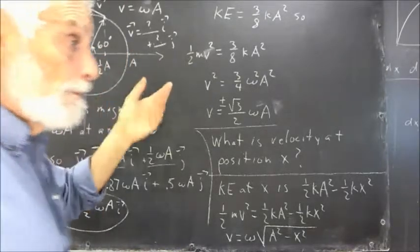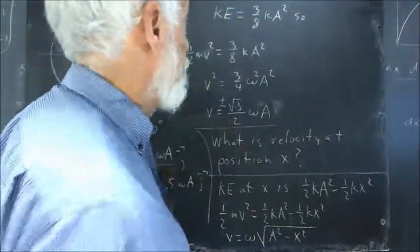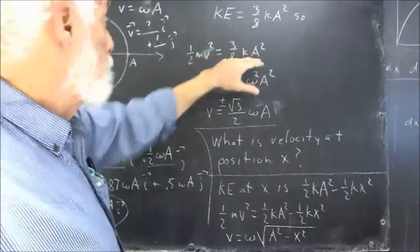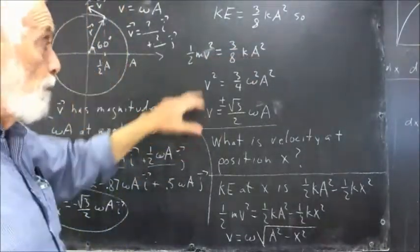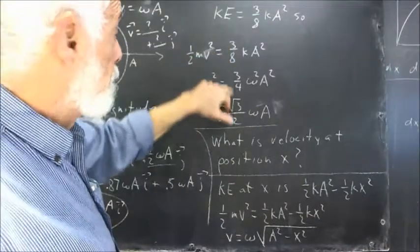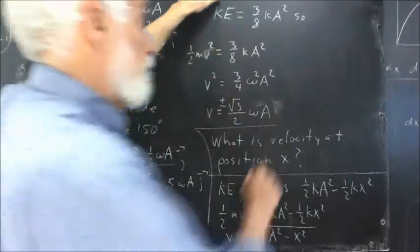And let's confirm that by using an energy analysis. We saw before the kinetic energy is 3 halves Ka squared, so we just set 1 half M V squared equal to that. And we get, multiplied by 2, we get 3 fourths, divide K by M, we get omega squared, because remember, omega is the square root of K over M.